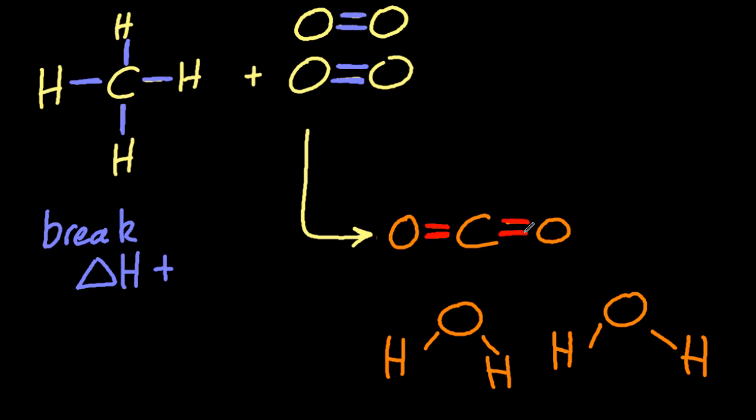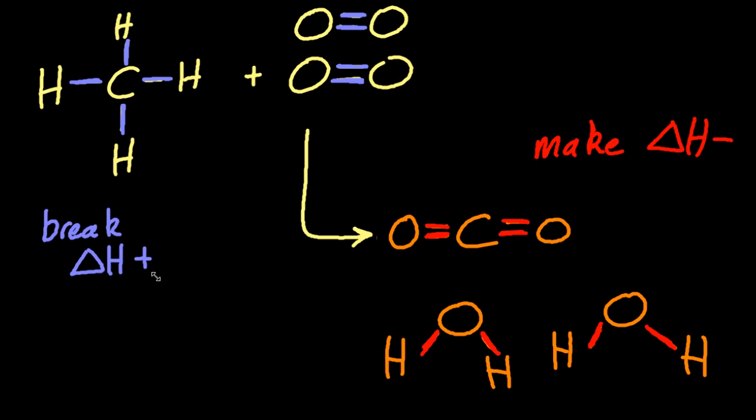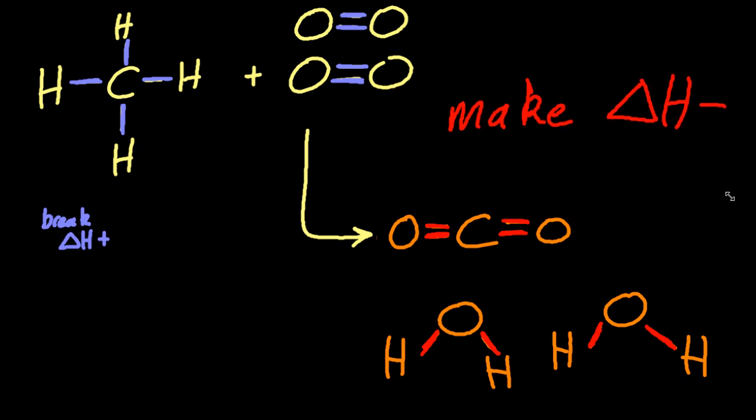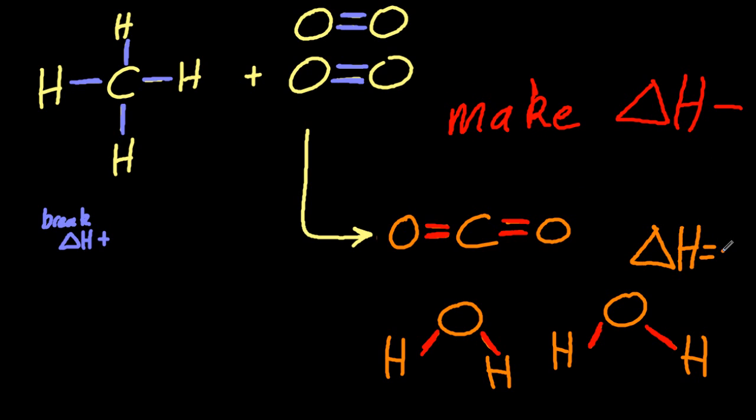And by making those bonds in the product side, that releases energy. When you make bonds, it releases energy back into the surroundings, the environment, if you will. And so delta H is going to be negative there. Now, overall, this must be exothermic. So the bond-breaking part, the bit that's cold, must be smaller than the bond-making part, the bit that is hot. So overall, delta H must be negative for this reaction. It must be exothermic, it must be hot.